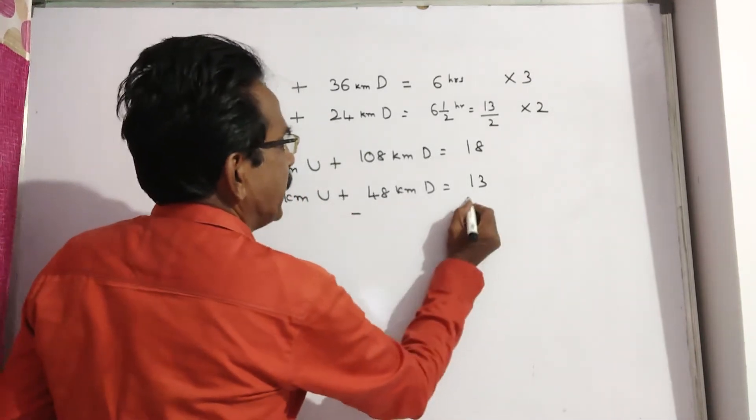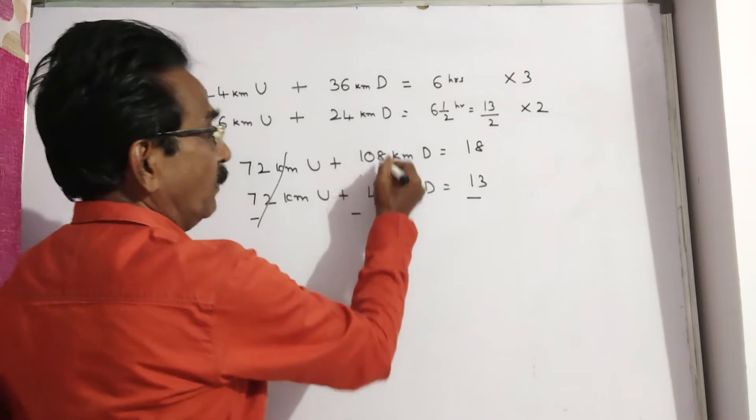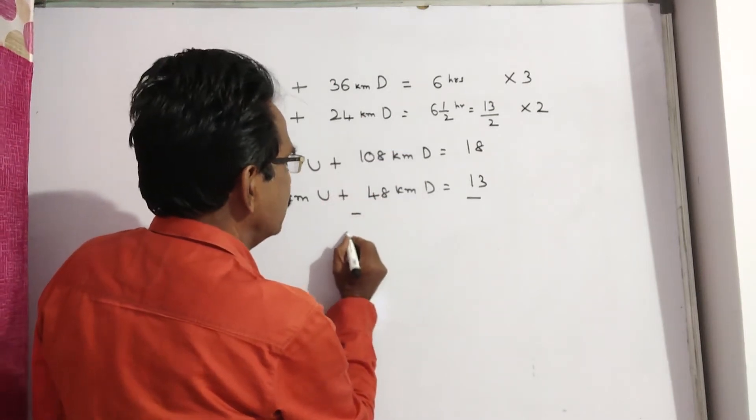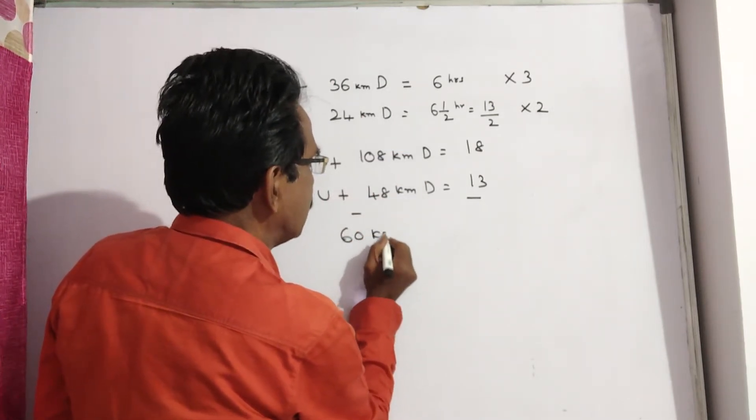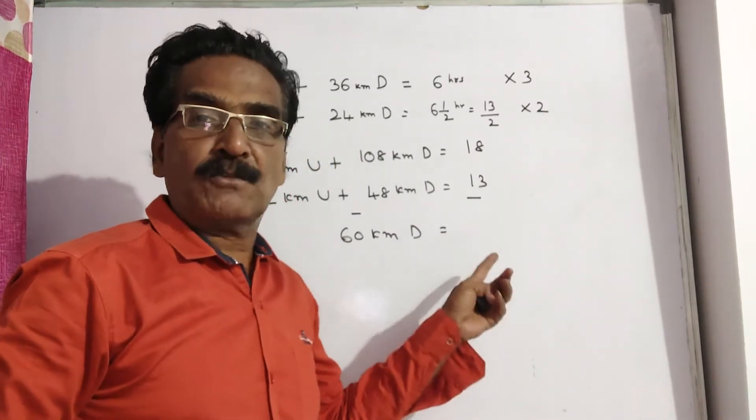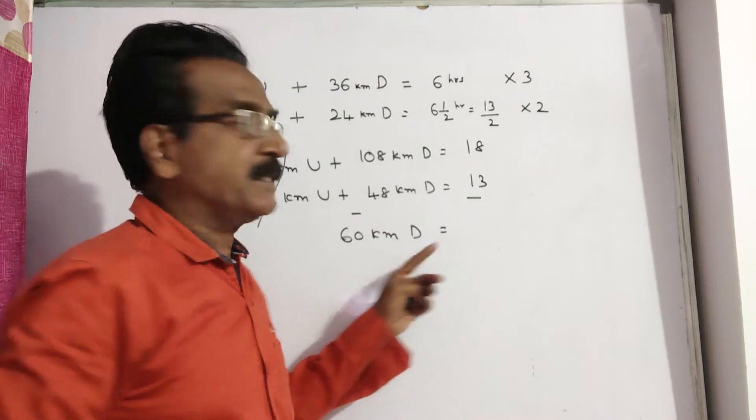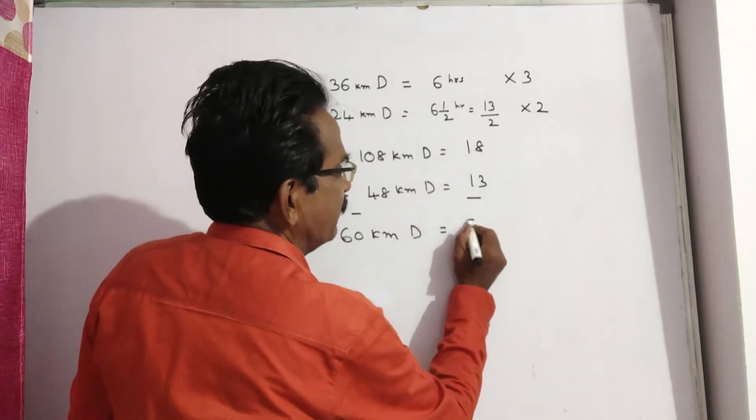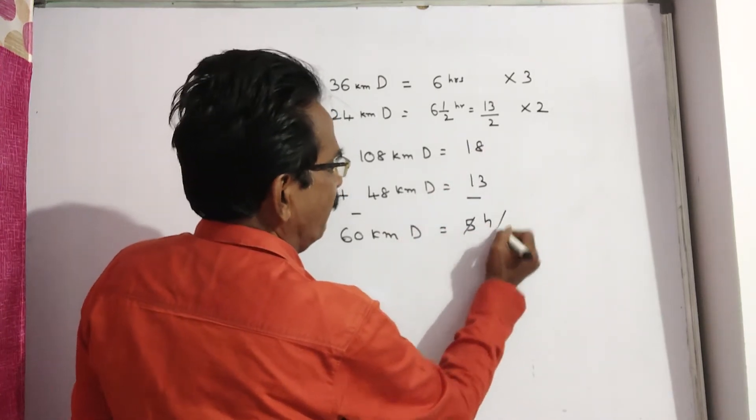Now subtracting, we get 108 minus 48, 60 kilometers downstream. To travel 60 kilometers downstream, it takes 5 hours.